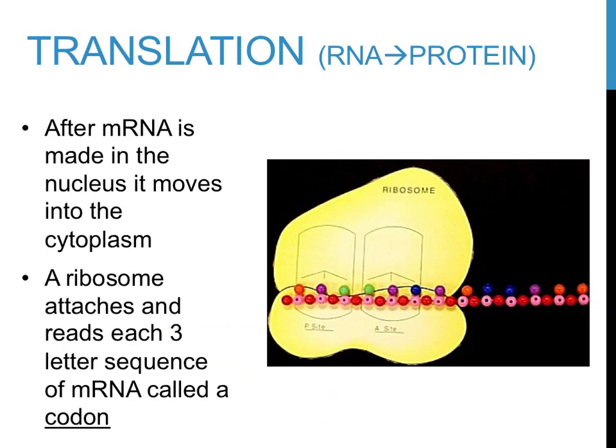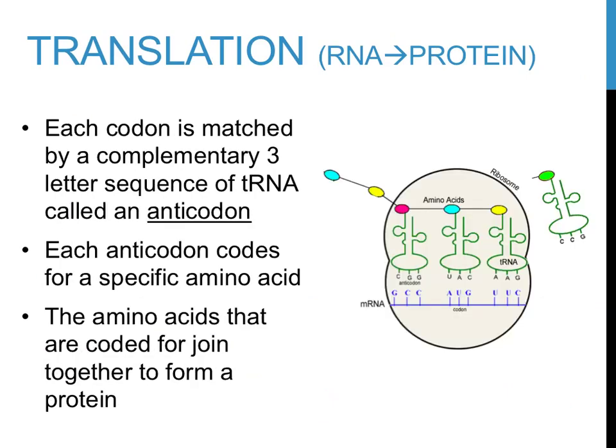This process is depicted in the image to the right. The ribosome is shown in yellow, while the multicolored string of spheres represent the messenger RNA strand. When the ribosome reads each three-letter sequence of mRNA, each codon, a tRNA molecule that contains a complementary sequence attaches to it. tRNA molecules are shown as green, hairpin-shaped structures in the image on the right-hand side of this slide. The three-letter sequence of tRNA is referred to as an anticodon. Each anticodon carries with it an amino acid, shown as brightly colored ovals in this image. As the process of translation occurs, these amino acids are linked together to form a protein.